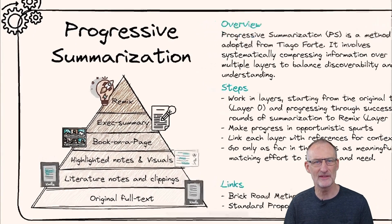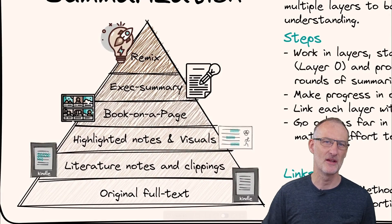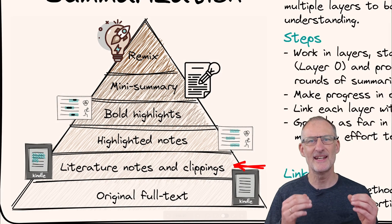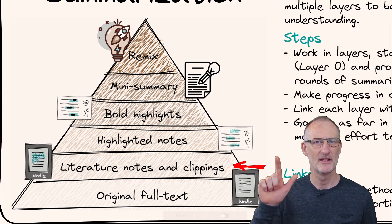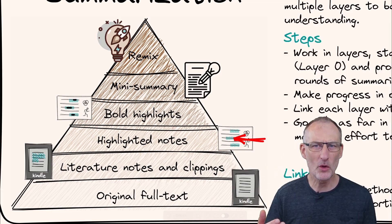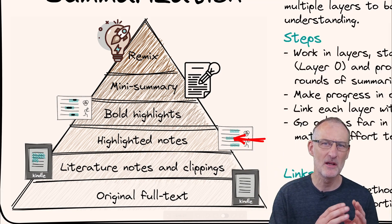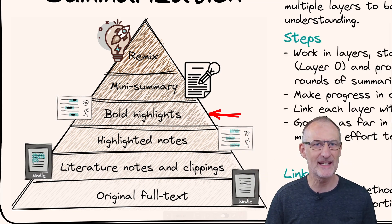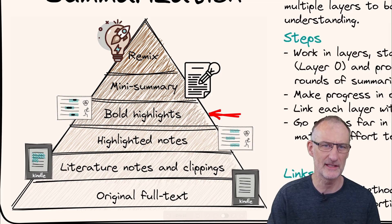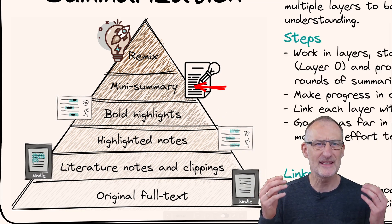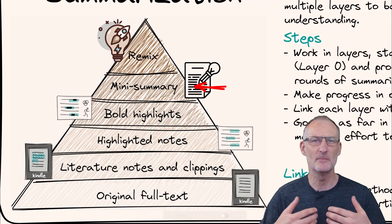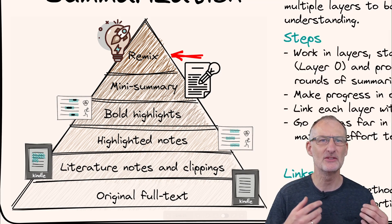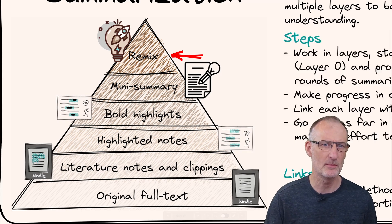Tiago defines 5 layers of summarization. First, highlight key points in the original full text and add short notes. Second, import your highlights and go through them, marking standout phrases. Third, review your highlights and bold the most critical words. Fourth, create a summary that encapsulates the book's core ideas. Finally, remix the content into a new format, like a blog post.